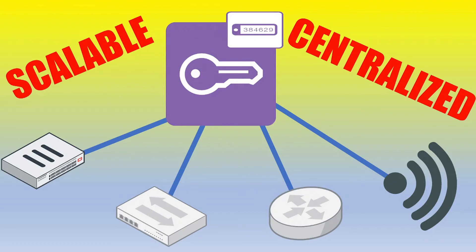In this video we will be configuring two-factor authentication with FortiAuthenticator. We're going to be using FortiToken and making sure that this is a centralized implementation so that multiple devices, both Fortinet and non-Fortinet, can use this second factor of authentication and integrate with the FortiAuthenticator. Additionally, we'll ensure that we can bulk import users and associate them with FortiToken at scale.